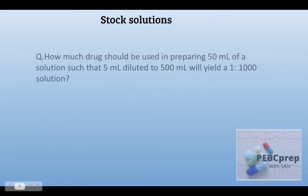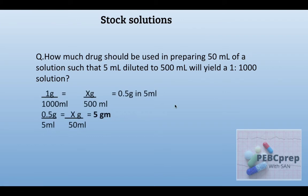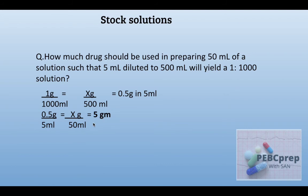Next question: how much drug should be used in preparing 50 ml of a solution such that 5 ml diluted to 500 ml will yield a 1:2000 solution? Similarly, we go backward. 1:2000 means 1 gram in 2000 ml, so in 500 ml that's 0.5 grams. Since 5 ml were diluted to 500, 0.5 grams were in 5 ml. If 0.5 grams in 5 ml, then in 50 ml we get 5 grams. Simple question.